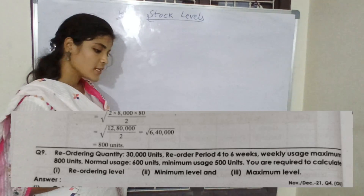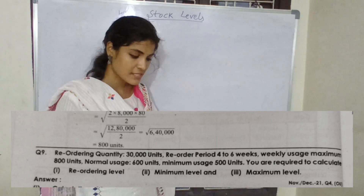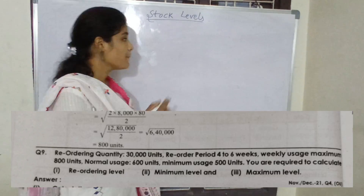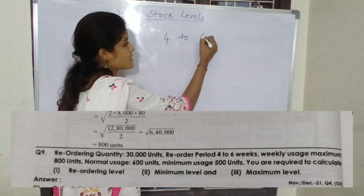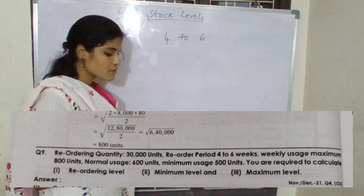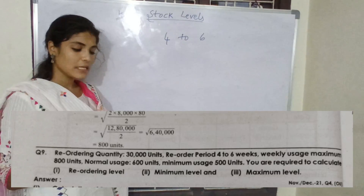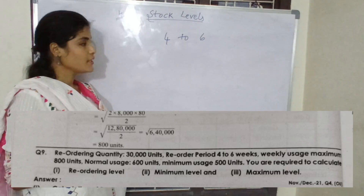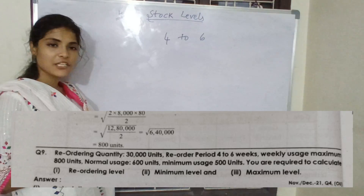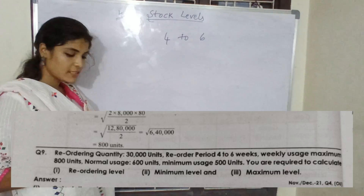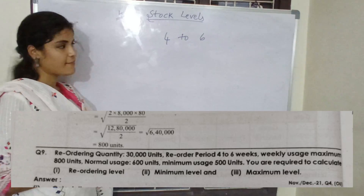So the question is: reordering quantity is 30,000 units. Reordering period is 4 to 6 weeks. Maximum usage is 800. Normal usage is 600. Minimum usage is 500. They have asked us to do calculation of reorder level, calculation of minimum level, and calculation of maximum level.